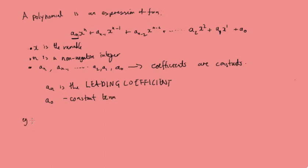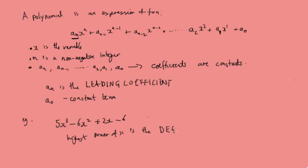So let's look at an example. Say we had 5x³ minus 6x² plus 2x minus 6. The highest power of x is the degree of the polynomial. So in this example, this is a degree 3 polynomial.